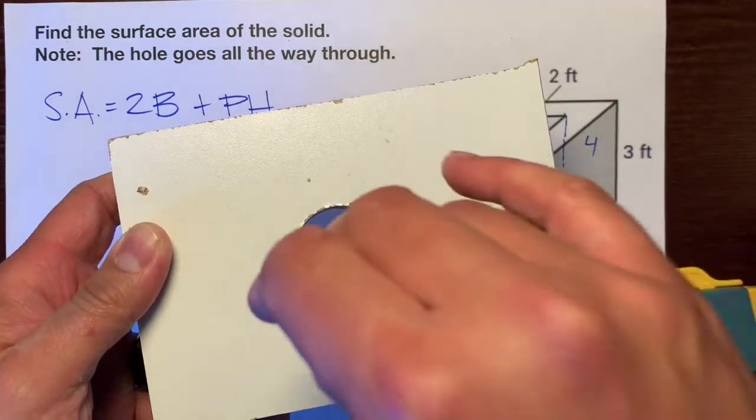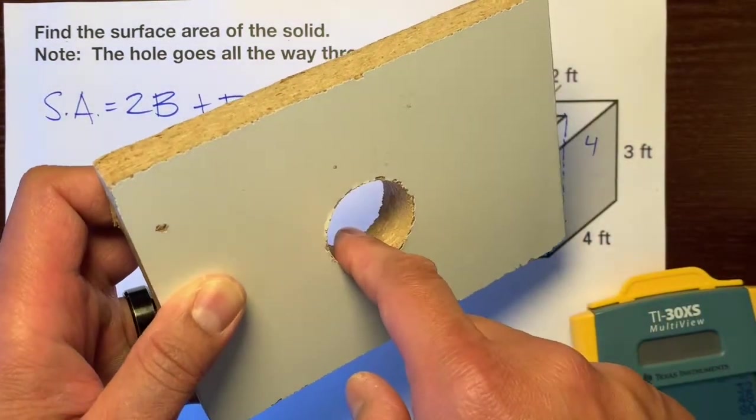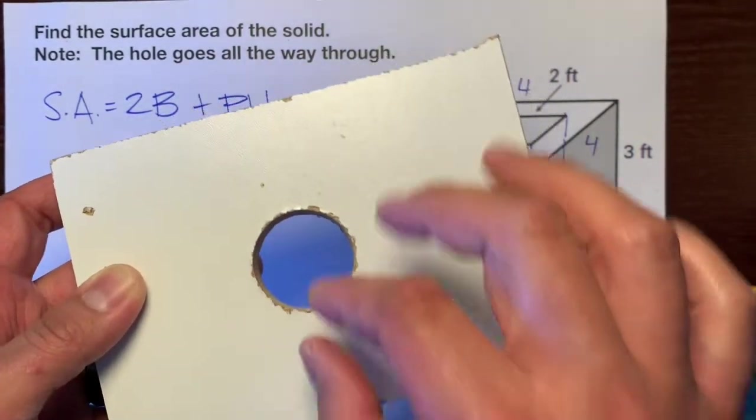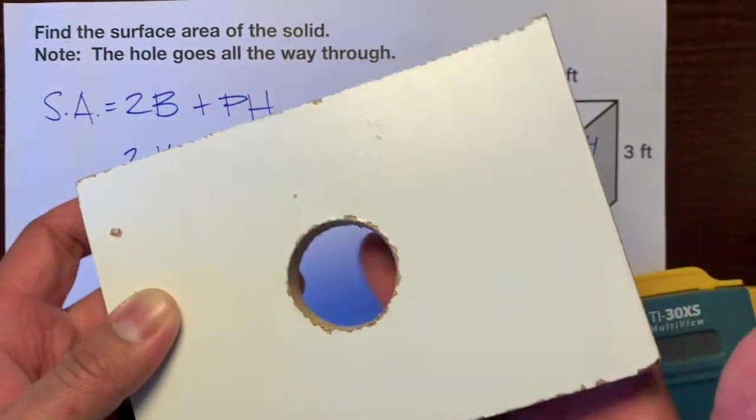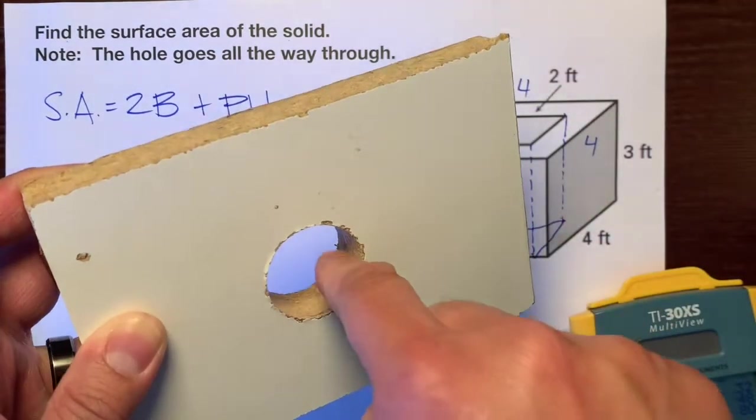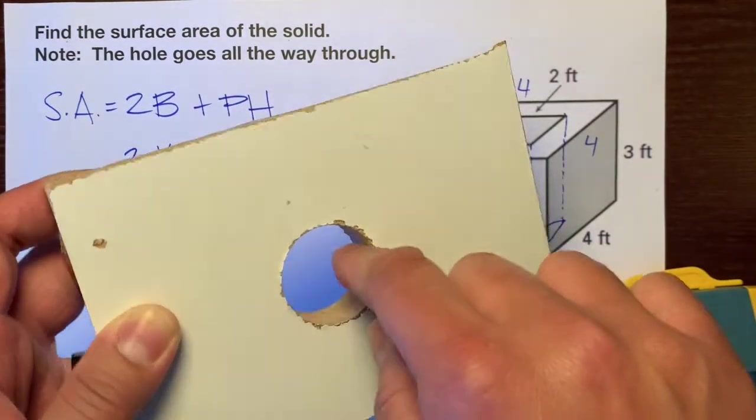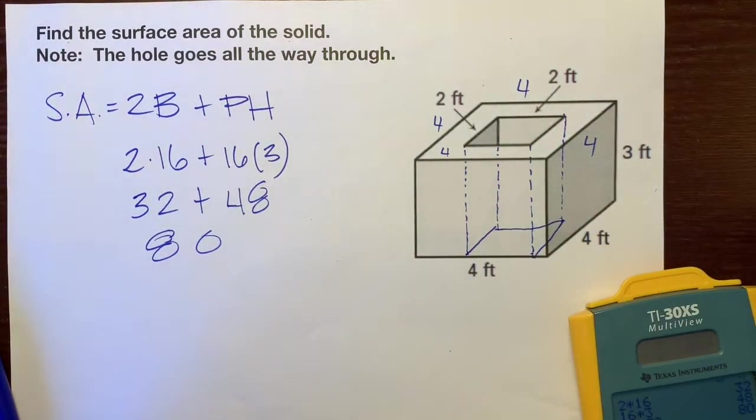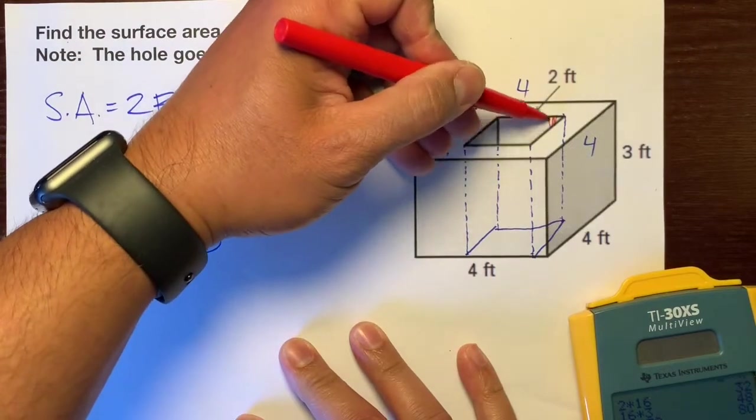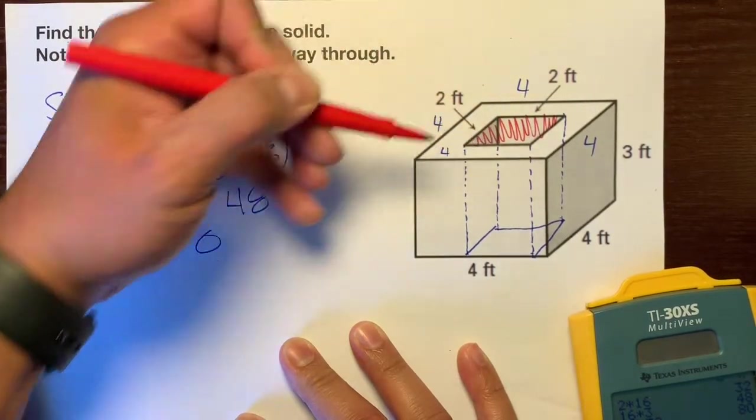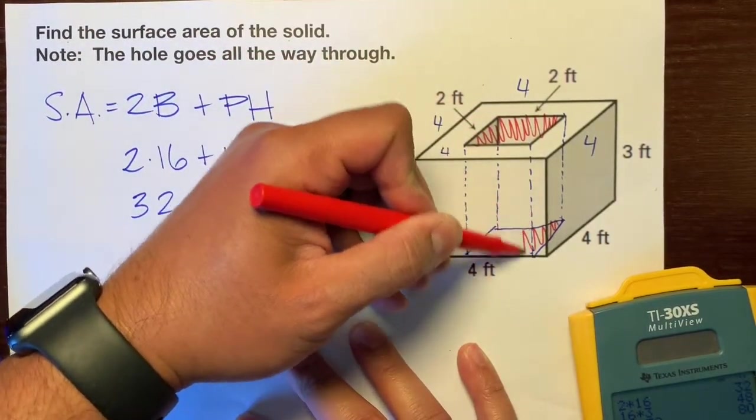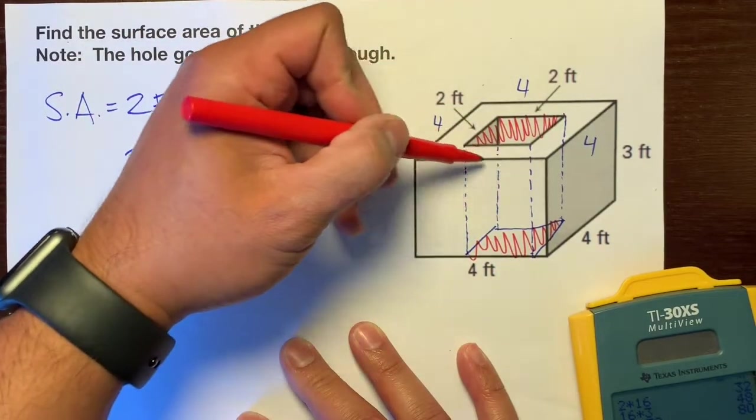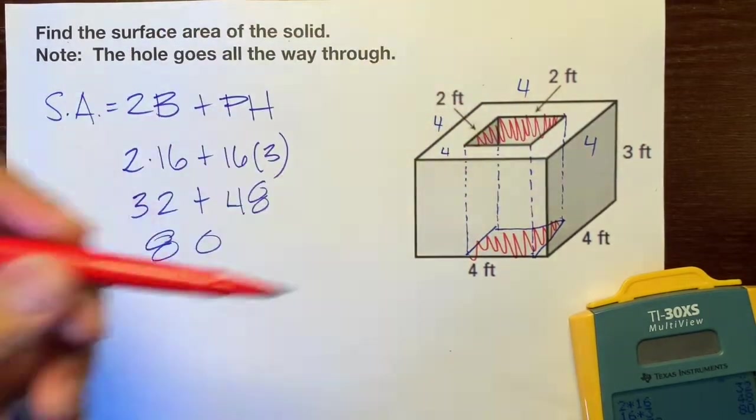But because it drills all the way through, it creates a new surface on the inside. So from the cylinder, the two bases, which are circles, take away surface, but this lateral area adds surface. So what I'm going to do is color this in red and color this in red, because these squares take away from the surface, but this inner part creates new surface.